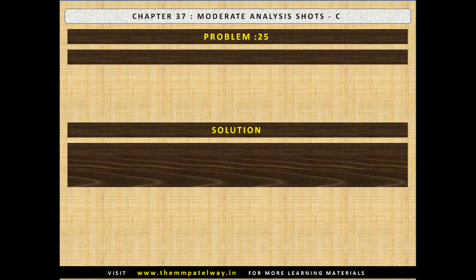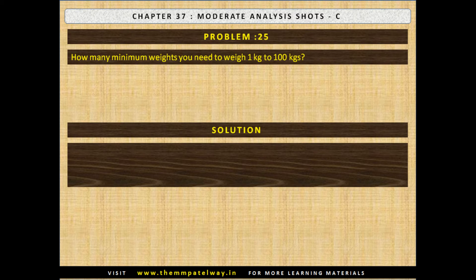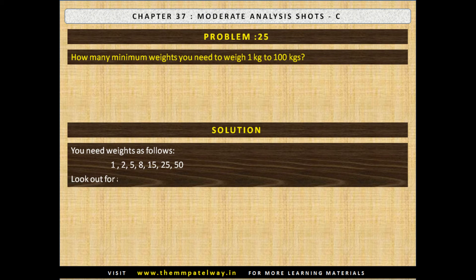Problem No. 25. How many minimum weights do you need to weigh 1 kg to 100 kg? The solution: you need weights of 1, 2, 5, 8, 15, 25 and 50. Look out for another possible set.